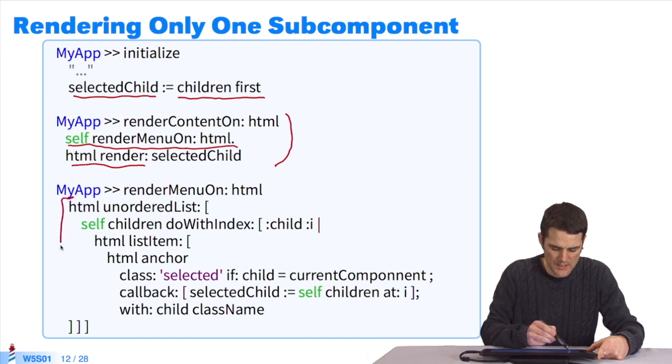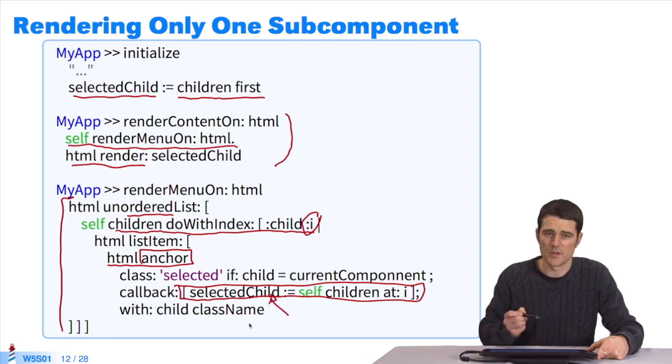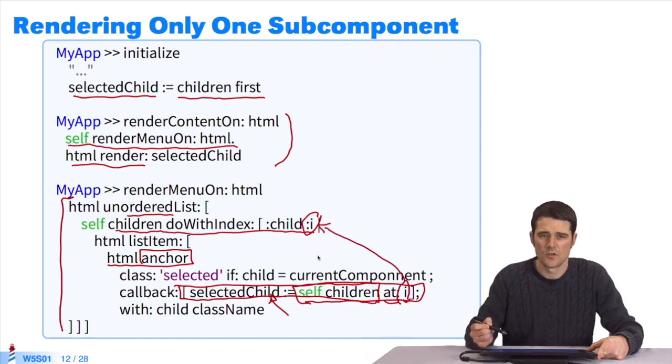Quite simply, in the menu, I'll generate one unordered list. I'll browse all of my subcomponents, which I browse with an index i, and I generate a list element for each child. Here, I'm going to generate an anchor, a clickable link, and when I click on this link, it will trigger the callback, the execution of this block. So we can say, it's easy, the component selected by the user is the child number, so self children. Remember, it's a collection, at i. And i here is no more, nor less, than the number of the element in the children collection. So it's extremely easy to browse all of the subcomponents, and to specifically generate, to completely control, what should and shouldn't be displayed.